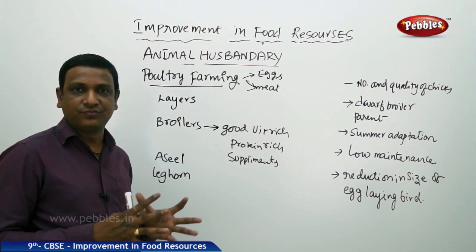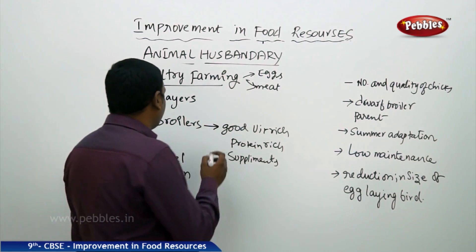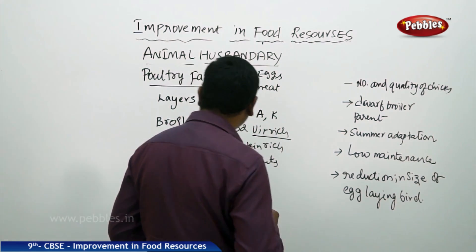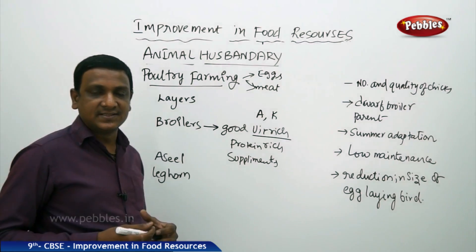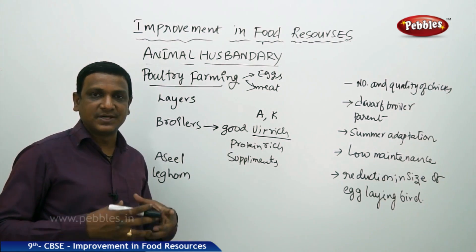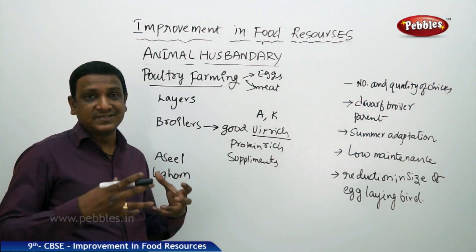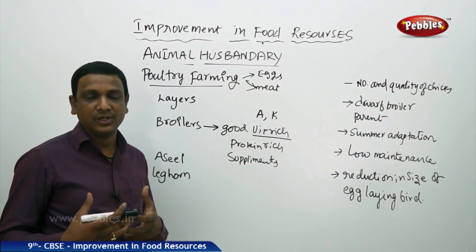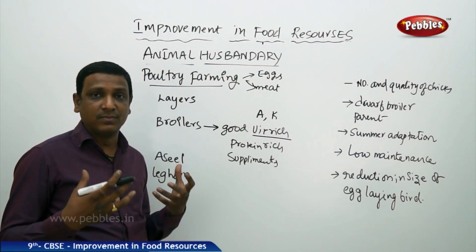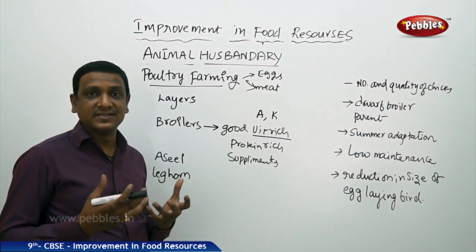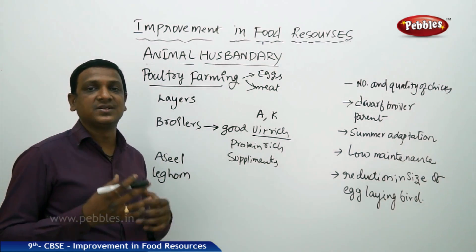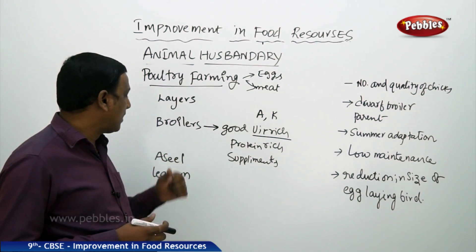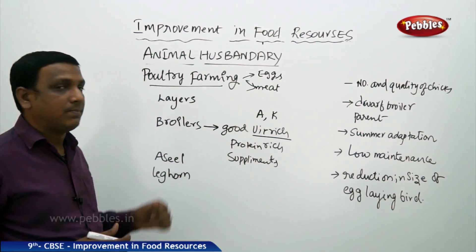Broiler food contains high amounts of Vitamin A and Vitamin K. Regarding diseases like bird flu — when it spreads it attacks quickly and leads to death or infection of the birds. Consuming such infected birds is not good for human health. Whenever such diseases spread, infected birds are killed, which is a great loss to the farmer. Proper vaccination must be done to protect birds from viral infections like bird flu.